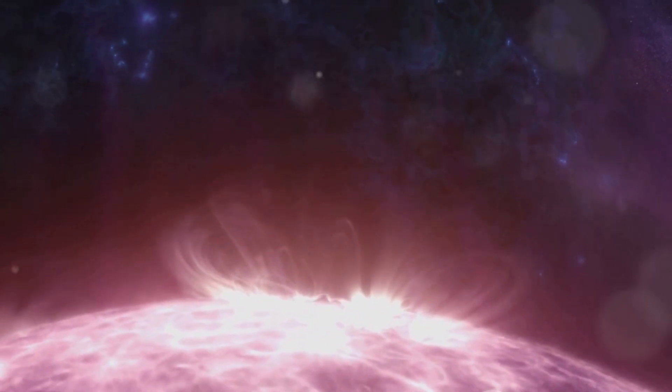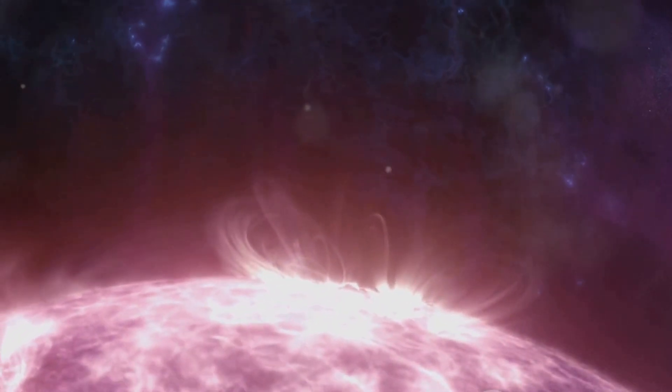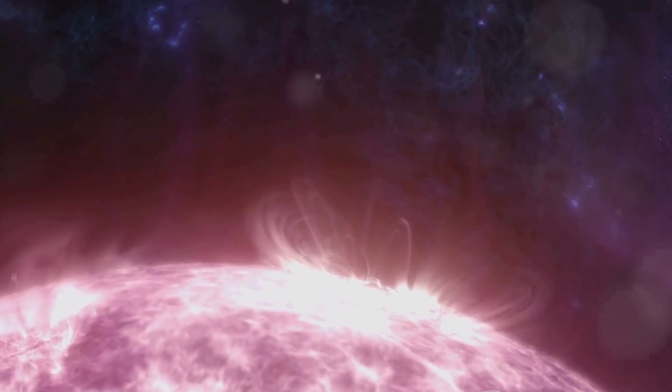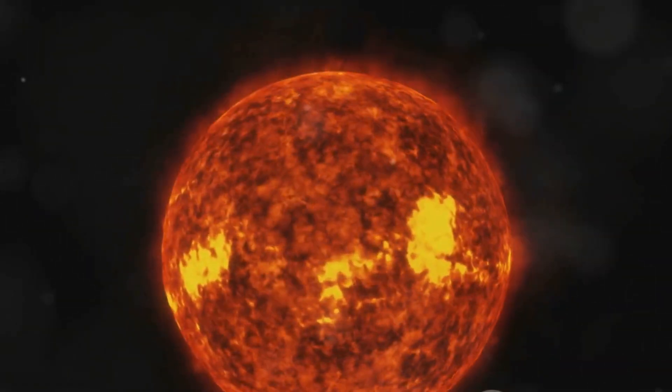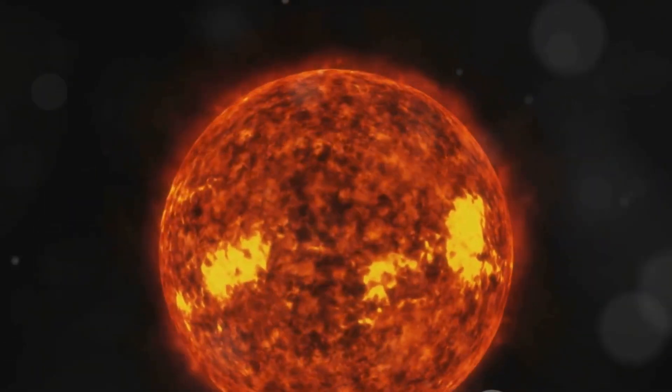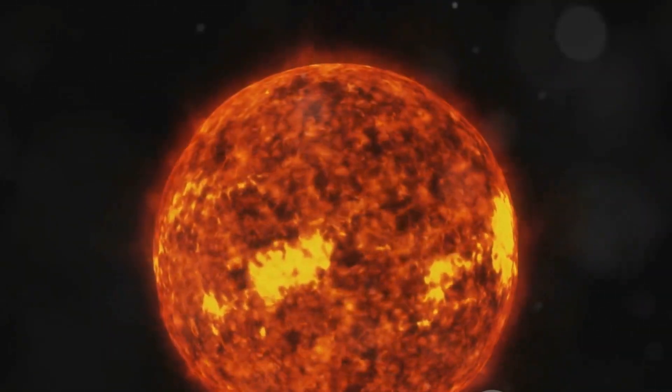During a solar storm, the Sun hurls a barrage of charged particles towards the Earth. These particles can interfere with our planet's magnetic field, causing disruptions in the technology we rely on. To understand the magnitude of this, let's look closer at the potential effects.